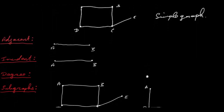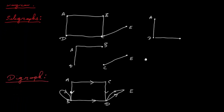Next we're going to look at subgraphs. A subgraph of a particular graph is where all the vertices or nodes of the subgraph are vertices or nodes of the original graph, and all the edges are also edges of the original graph. For example, here we have a graph, and this would be a subgraph containing A, D and C — these edges and nodes are edges and nodes of the original graph. So this is a subgraph, and I've done a couple more here as well.